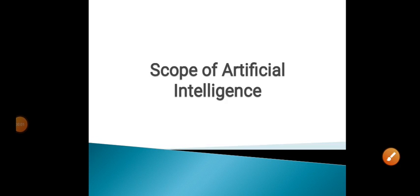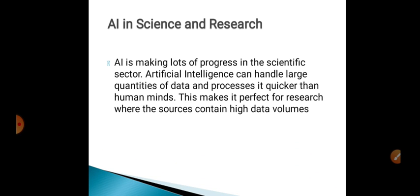Hello students. We'll see the next part of artificial intelligence — that is, the scope of artificial intelligence, the areas of artificial intelligence, meaning where we can use and adopt artificial intelligence techniques. The first area is AI in science and research.